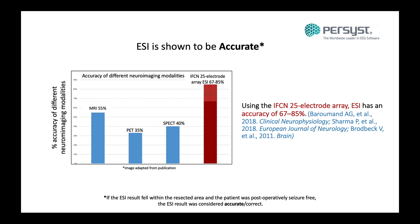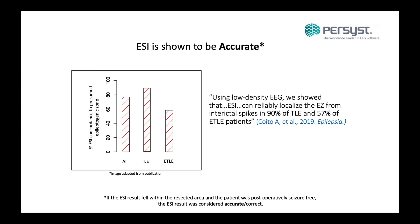Of the studies referenced here, accuracy is defined as whether the ESI result fell within the resected area and whether the patient was postoperatively seizure-free for at least one year. Here's another example from recent literature: in a paper from Coito et al. from 2019, they showed that using low-density EEG, ESI can reliably localize the epileptogenic zone from interictal spikes in 90% of temporal lobe epilepsy and 57% of extra-temporal lobe epilepsy patients.